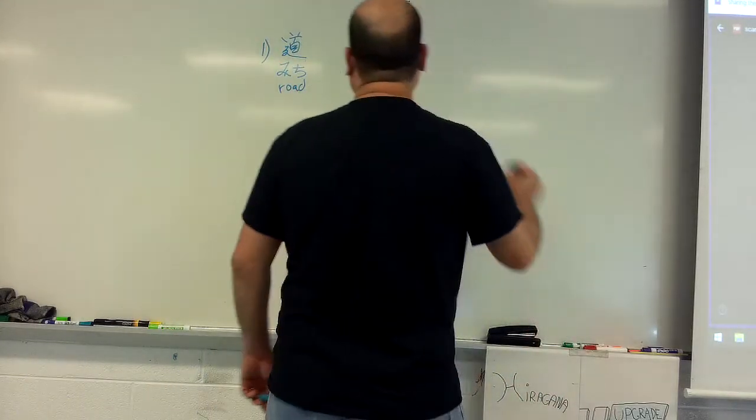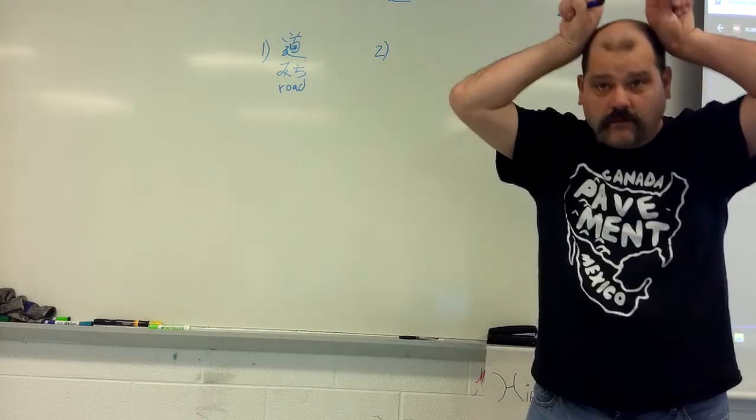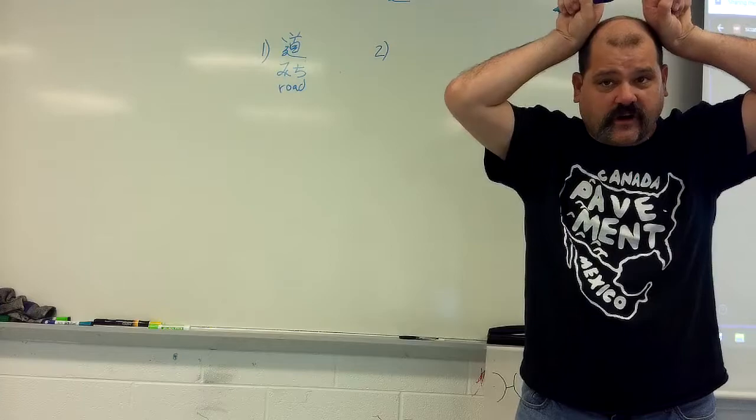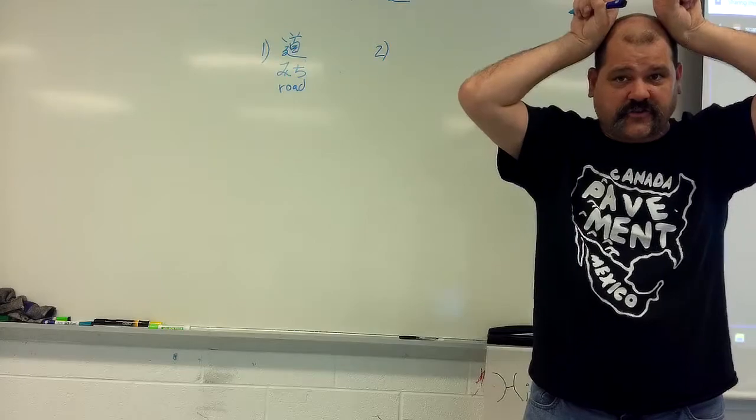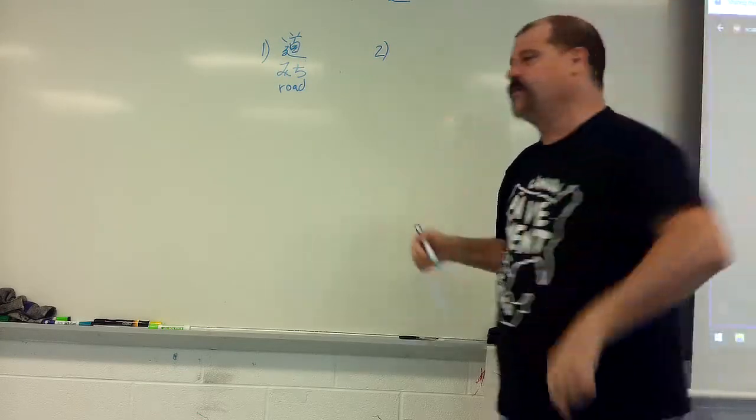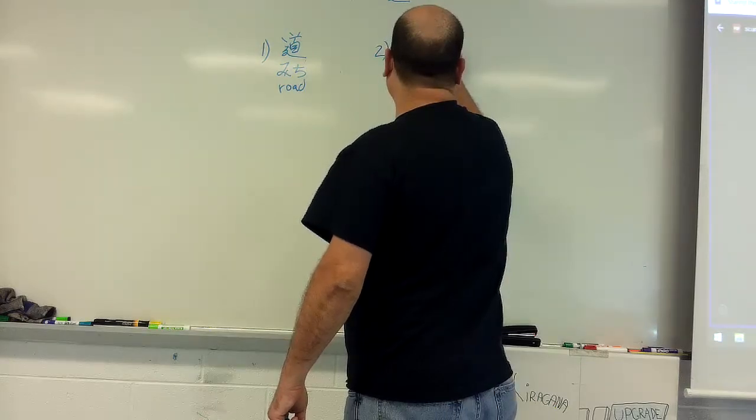Number two is kadō. This means corner. This also is tsuno. So the horns of a cow are called... They use this kanji as well. Tsuno. But kadō is also a corner.